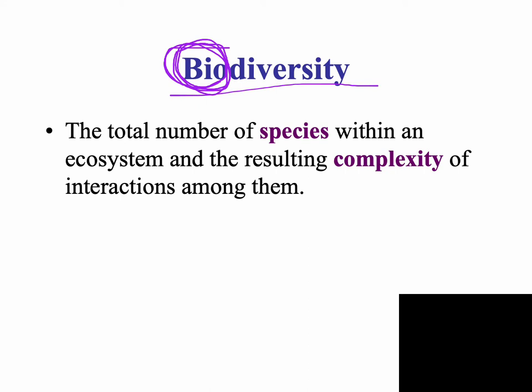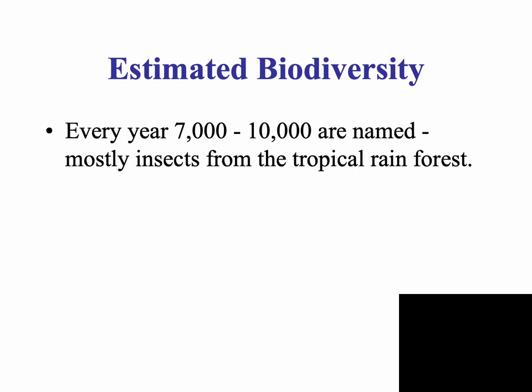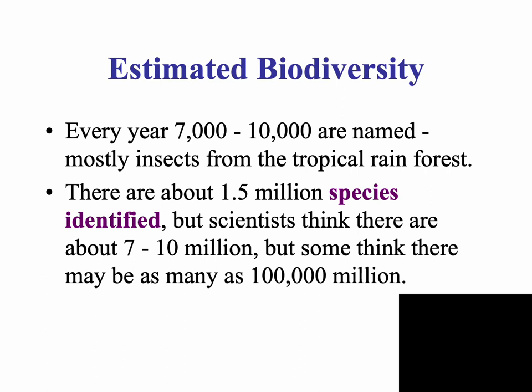We need plants, algae, and cyanobacteria that photosynthesize to provide us with oxygen, and we need plants to provide us with food. The estimated amount of biodiversity: there are about 7,000 to 10,000 new species discovered and named every year, mostly insects from tropical rainforests, so that number continues to increase. Species also go extinct, which changes estimates. In terms of how many species are out there, about 1.5 million have been identified, but scientists estimate the actual number could range from 7 million to as many as 100,000 million.